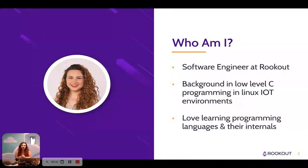Rookout supports six different languages and for each of those languages we have a different product in that language. So I find myself translating a lot of code. One of my first tasks here was to translate a section of code from Java to Go. This talk is based off of that experience, the mistakes I made, and the tips and tricks I learned along the way.